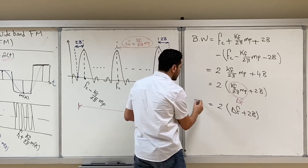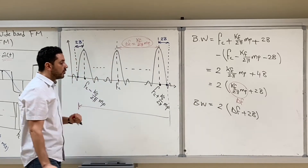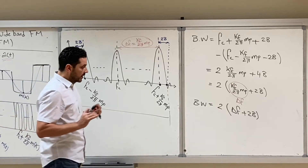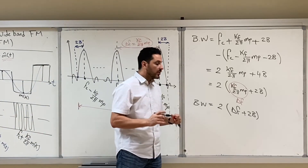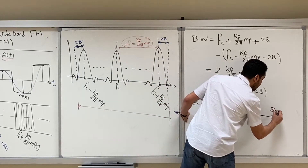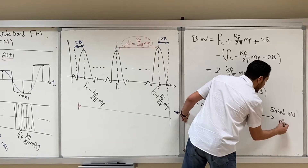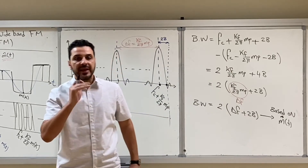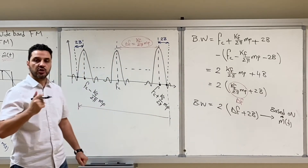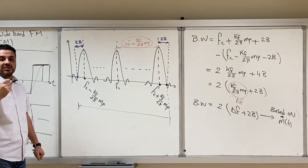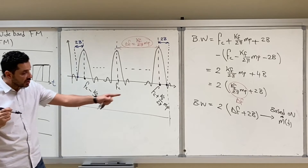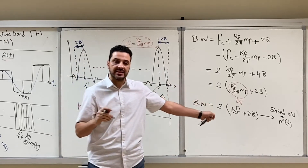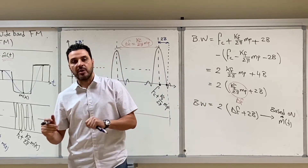We can therefore write the bandwidth as 2Δf + 2B. This is the bandwidth we derived for our FM signal based on the staircase approximation m̂(t). Now, a question: this bandwidth was based on m̂(t), not m(t). Do you expect the actual bandwidth based on the original signal m(t) to be larger or smaller than 2Δf + 2B? Take a moment to think about it.